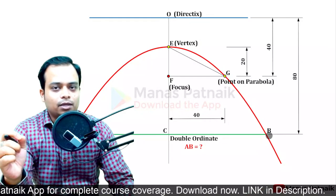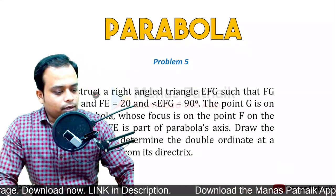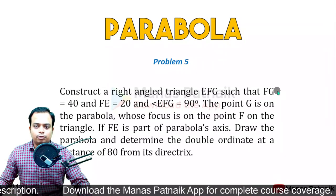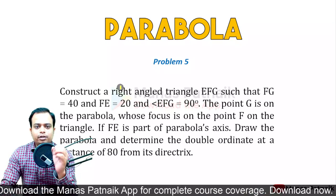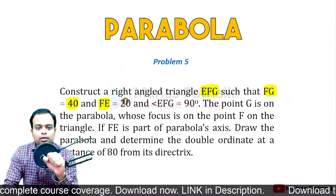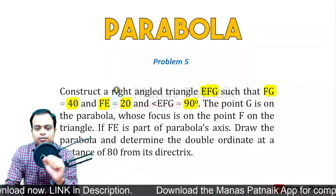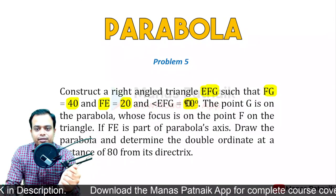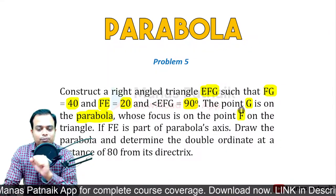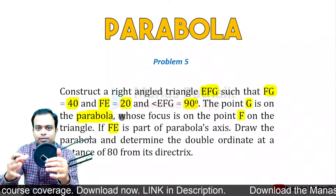Let's read the question. We need to construct a triangle EFG. The lengths FG and FE have been given as 40 and 20 respectively. Angle EFG is equal to 90 degrees. Point G is on the parabola whose focus is at point F, and FE is part of the parabola's axis.